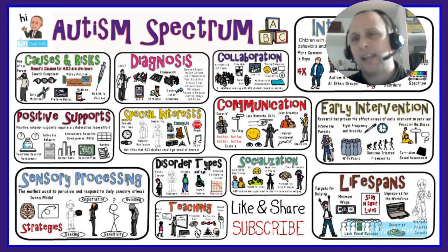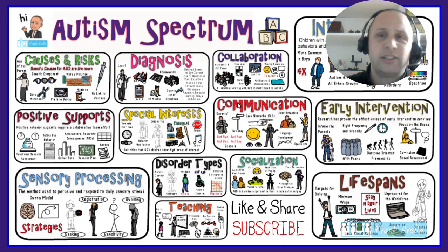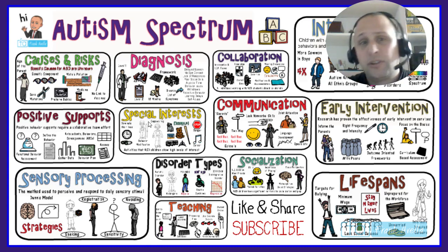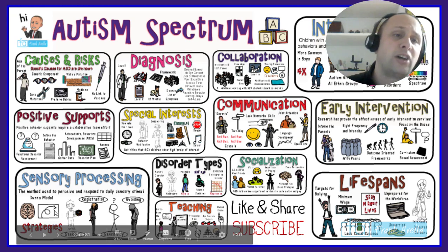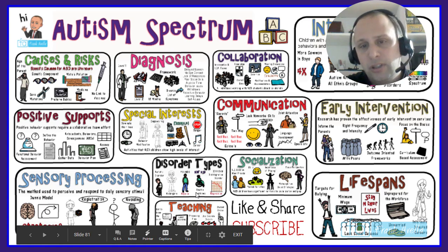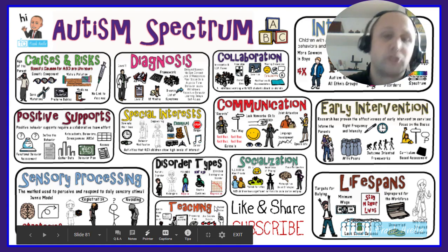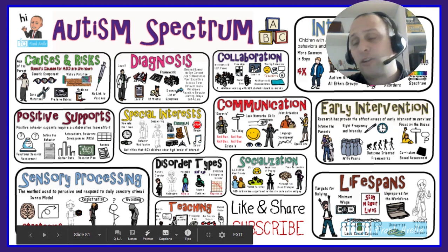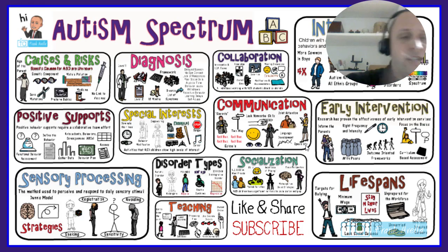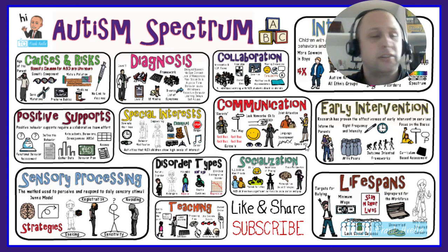We're coming to the end of the presentation. This is a quick review of all the topics: causes and risks, diagnosis, collaboration. Remember, it's a communication disorder. These children have special interests. Positive supports are great. Understand sensory processing and what you bring into the classroom. Know the different disorder types — PDD-NOS, Asperger's. Remember they have trouble socializing. We went over teaching strategies like choice assignments and using concrete objects, early intervention effectiveness, and the lifespan.